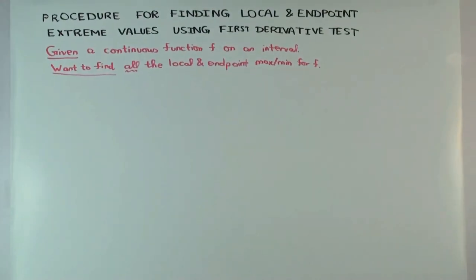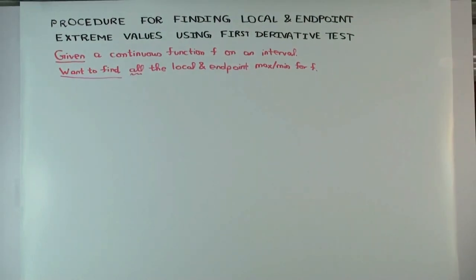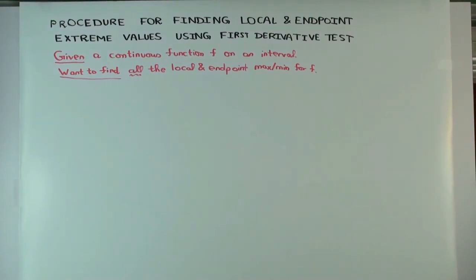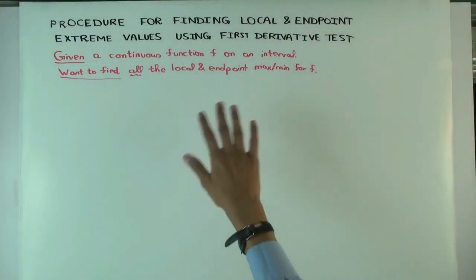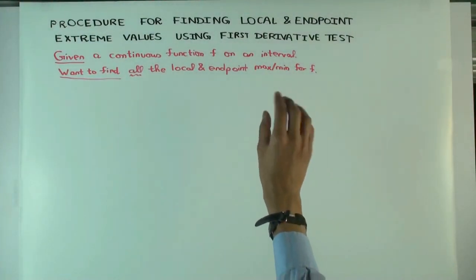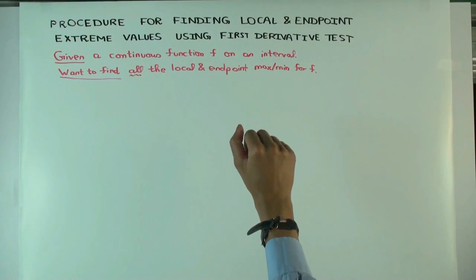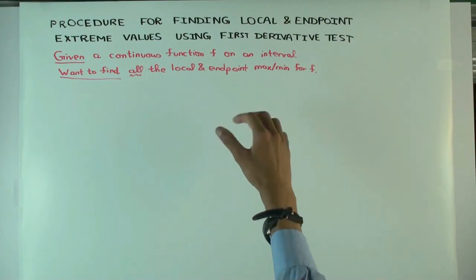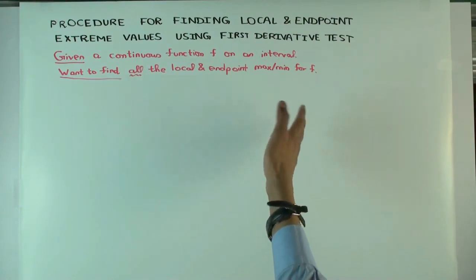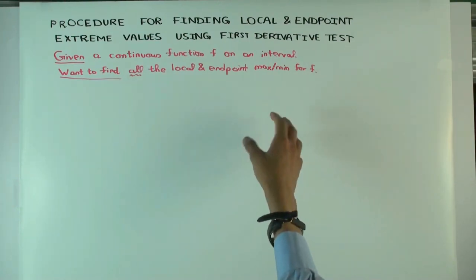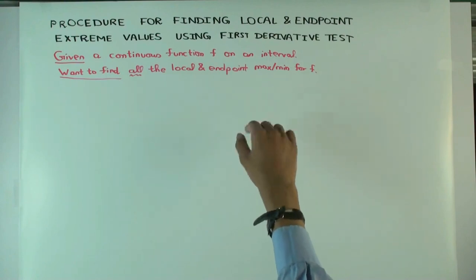I want to find all the local and endpoint max and min. Local max means that it's greater than or equal to values both in the immediate left and the immediate right — it's a point in the interior. Local min means it's less than or equal to values in the immediate left and right — it's also a point in the interior.